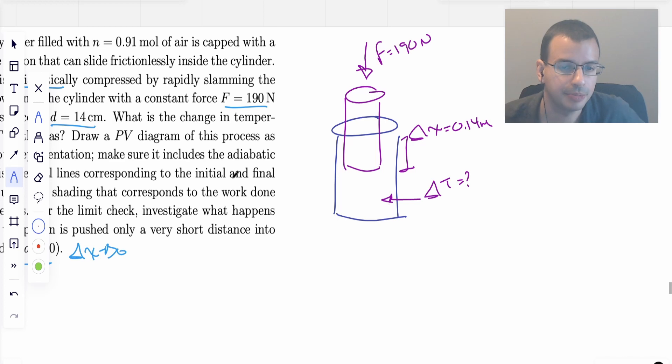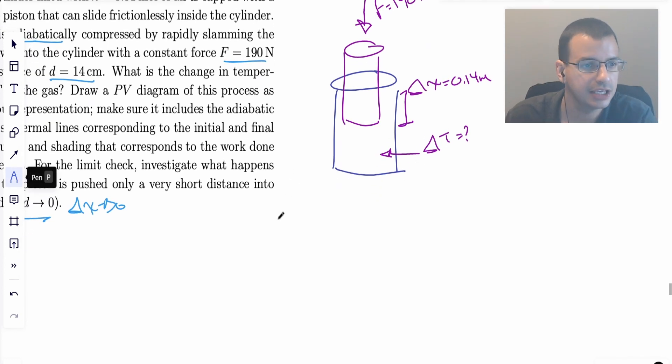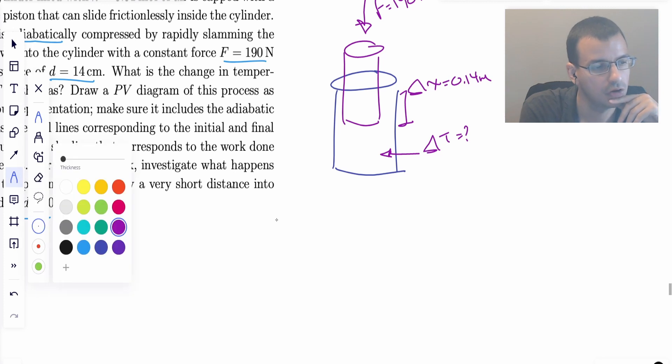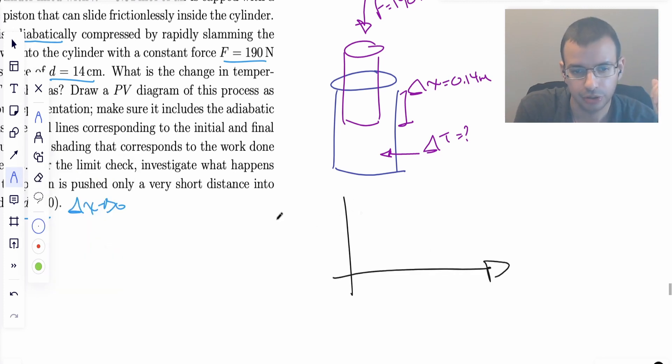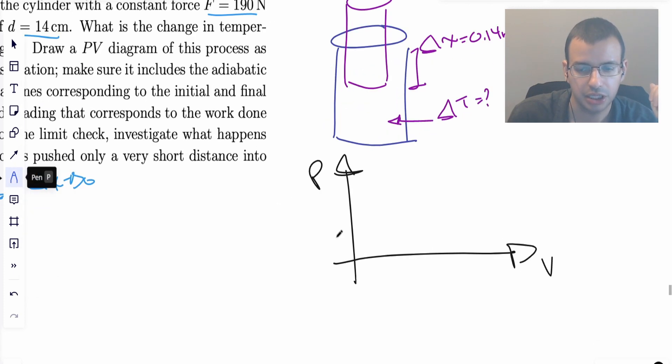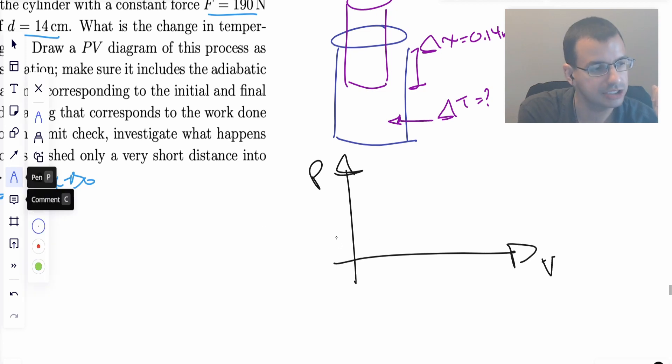Now the second part of our picture is the PV diagram: pressure on the y-axis, volume on the x-axis. We're going to do an adiabatic process. I'm going to say it looks kind of like this, not really drawn to scale, and we're going from large volume to small volume in this direction.